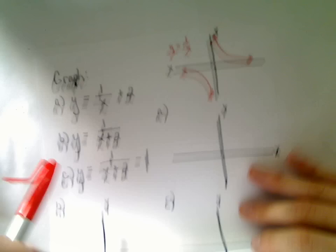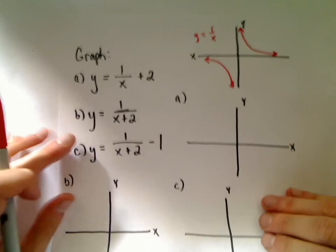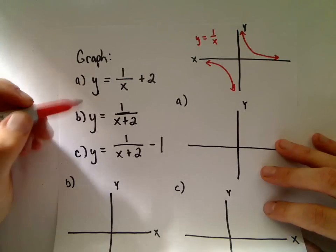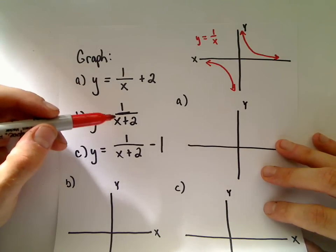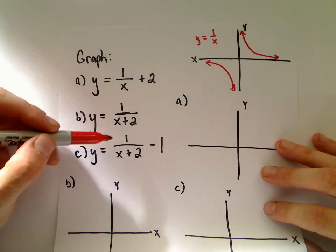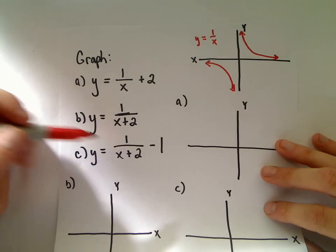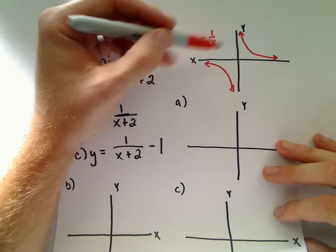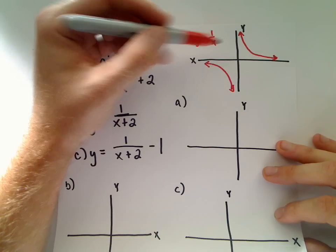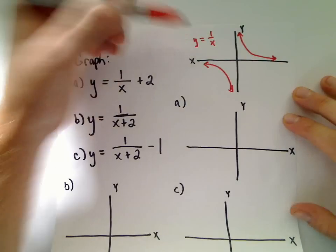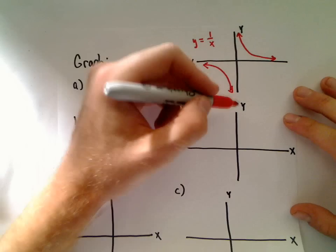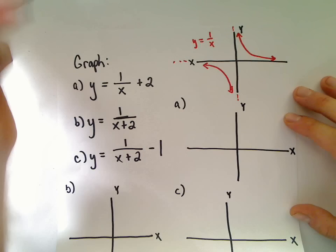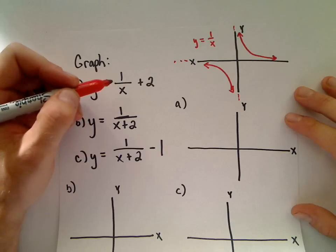Let's graph a couple examples. I'm going to graph a) 1/x + 2, b) 1/(x+2), and c) 1/(x+2) - 1. We need to know the basic graph of 1/x. 1/x has a vertical asymptote on the y-axis and a horizontal asymptote along the x-axis.